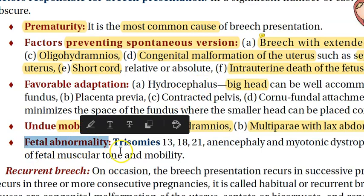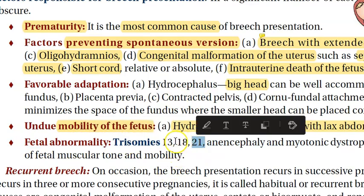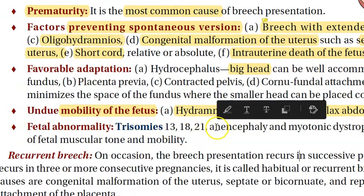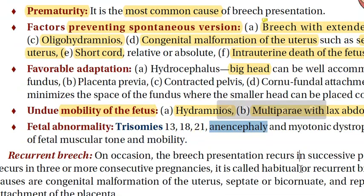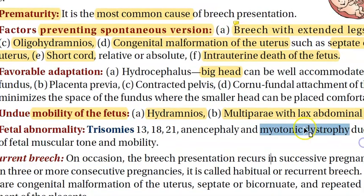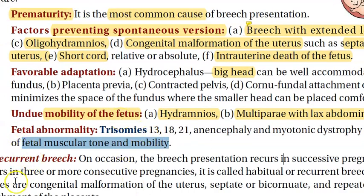Fetal abnormalities: chromosomal abnormalities like Down syndrome, Edwards syndrome, and Patau syndrome (trisomy 13). Anencephaly — no brain — and myotonic dystrophy, where there is some problem with the muscle tone of the baby. Because of alteration of fetal muscle tone and mobility, the baby cannot move properly, and that can be a cause for breech presentation.